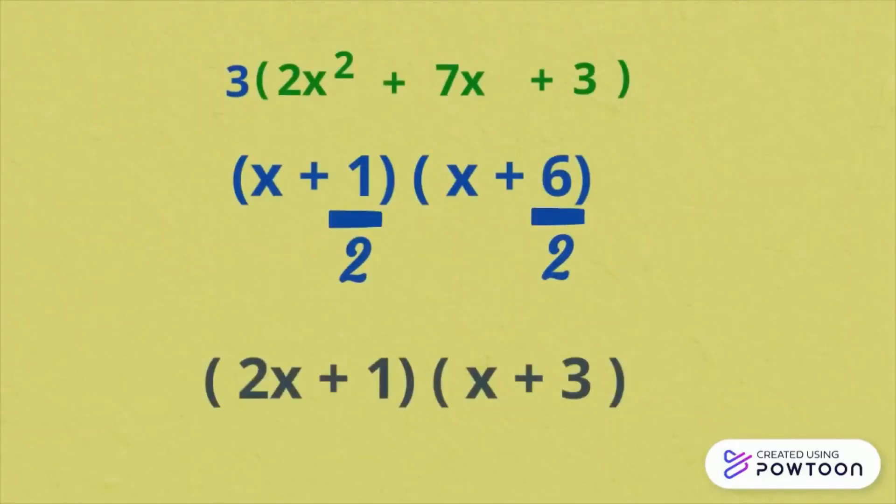In this case, 1 is not divisible by 2, so just simply write 2 in front of x. Next, we have 6 divided by 2 is 3. So, the final factors are 2x plus 1 and x plus 3.